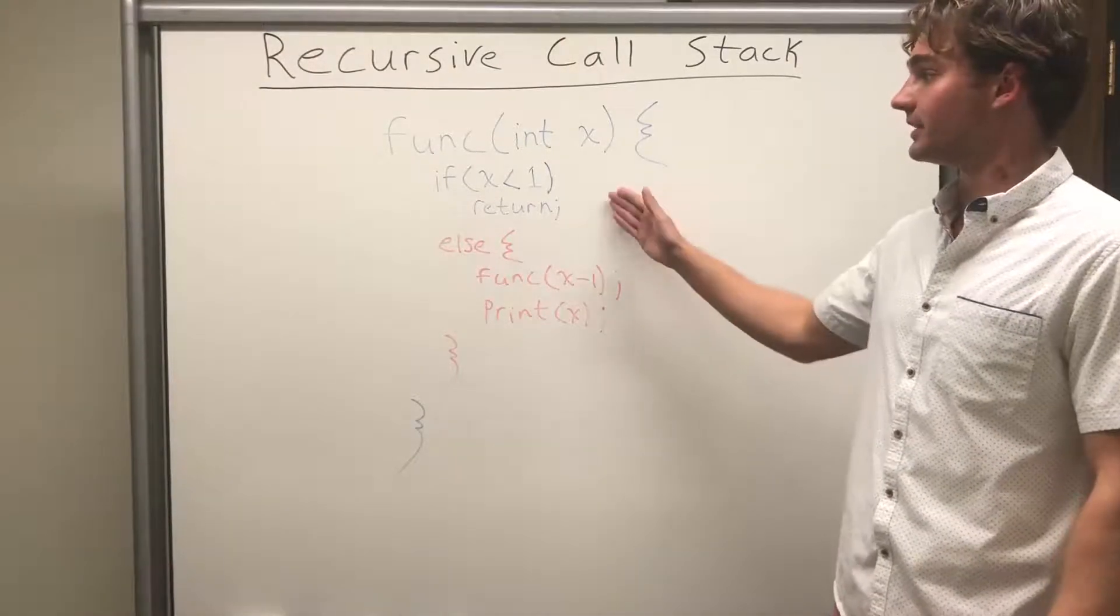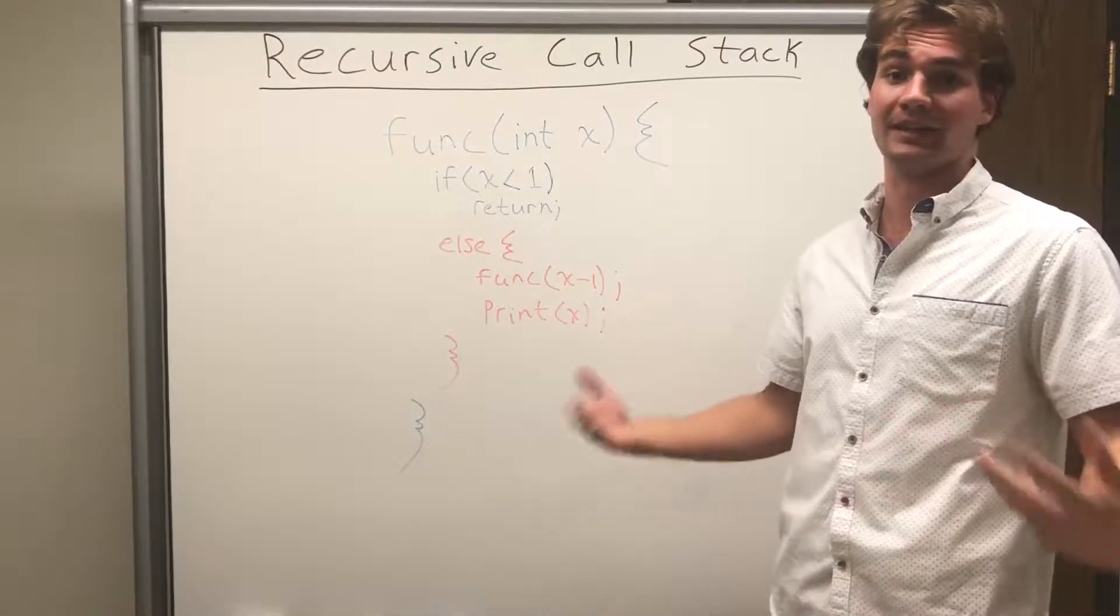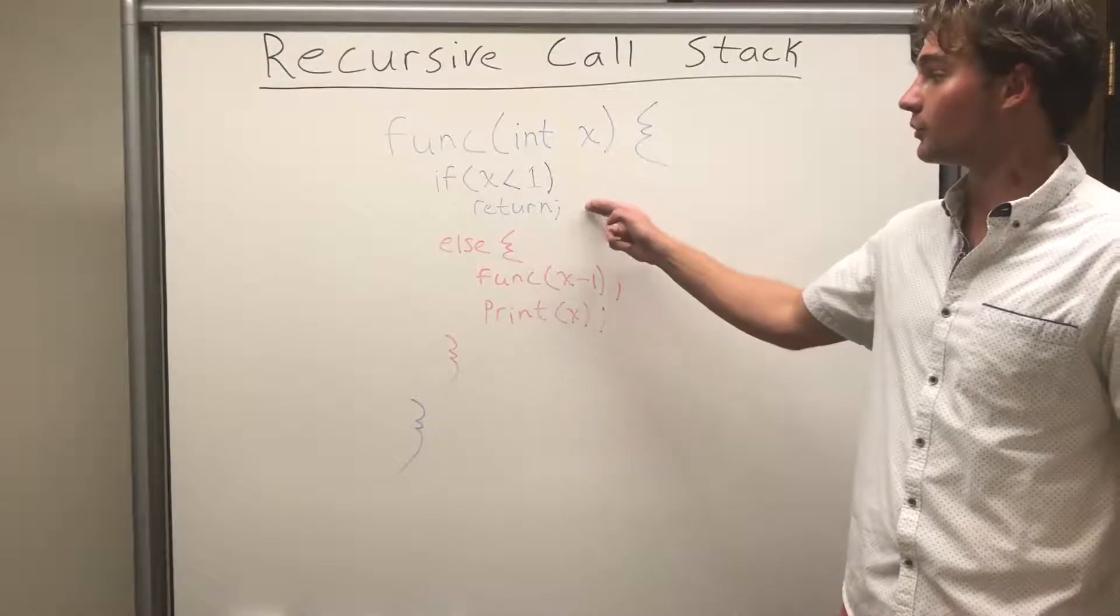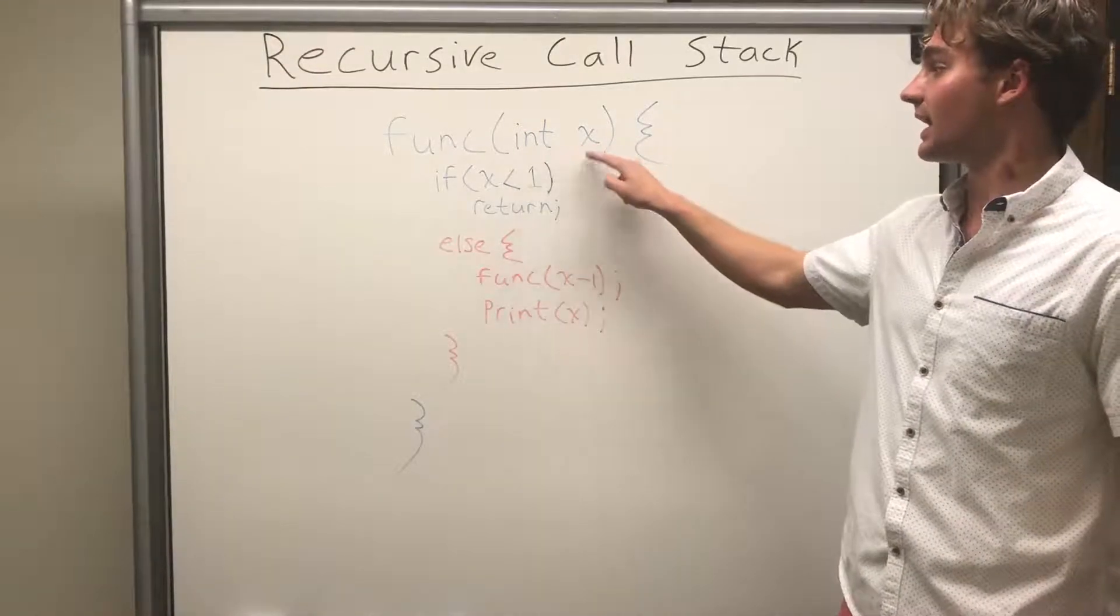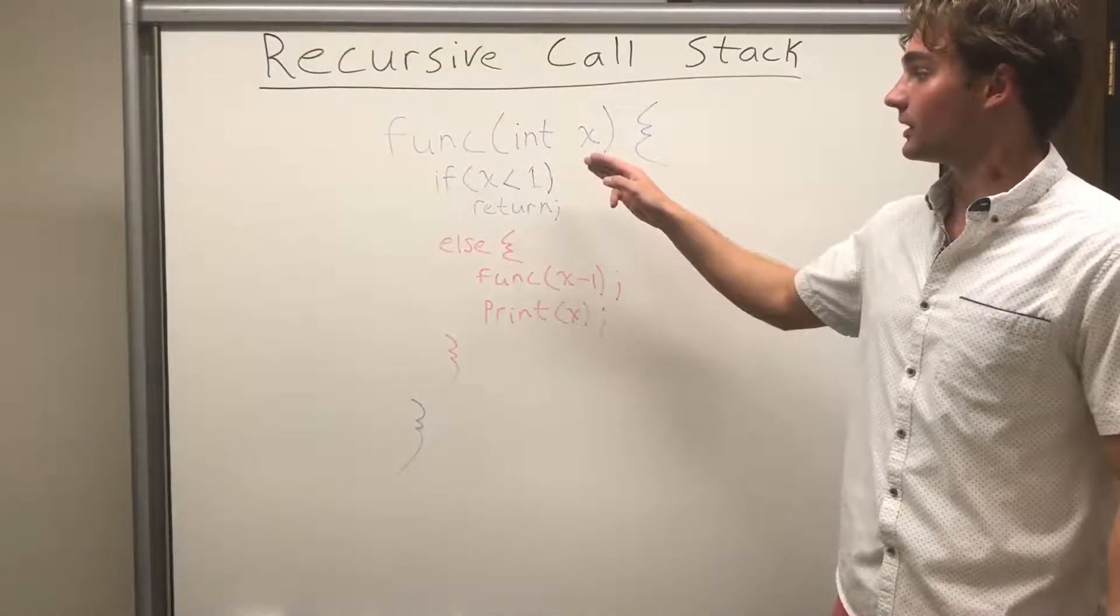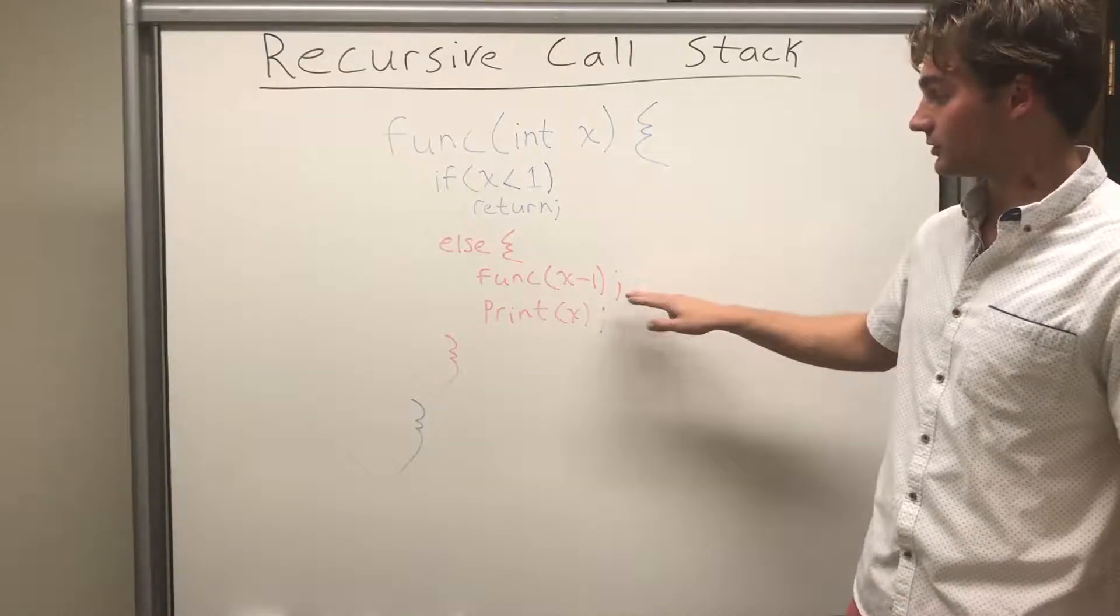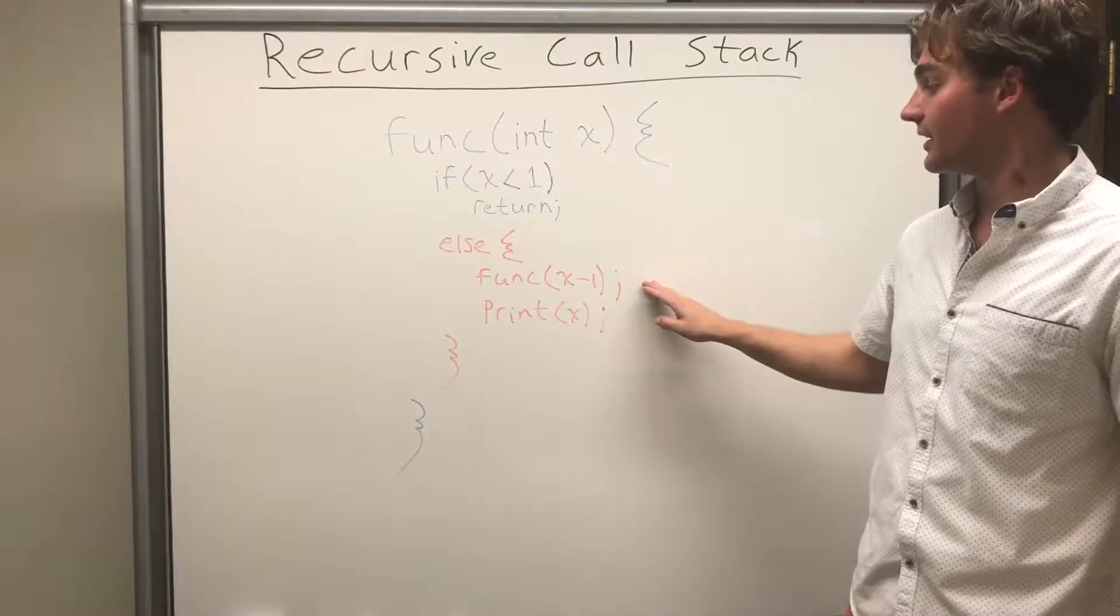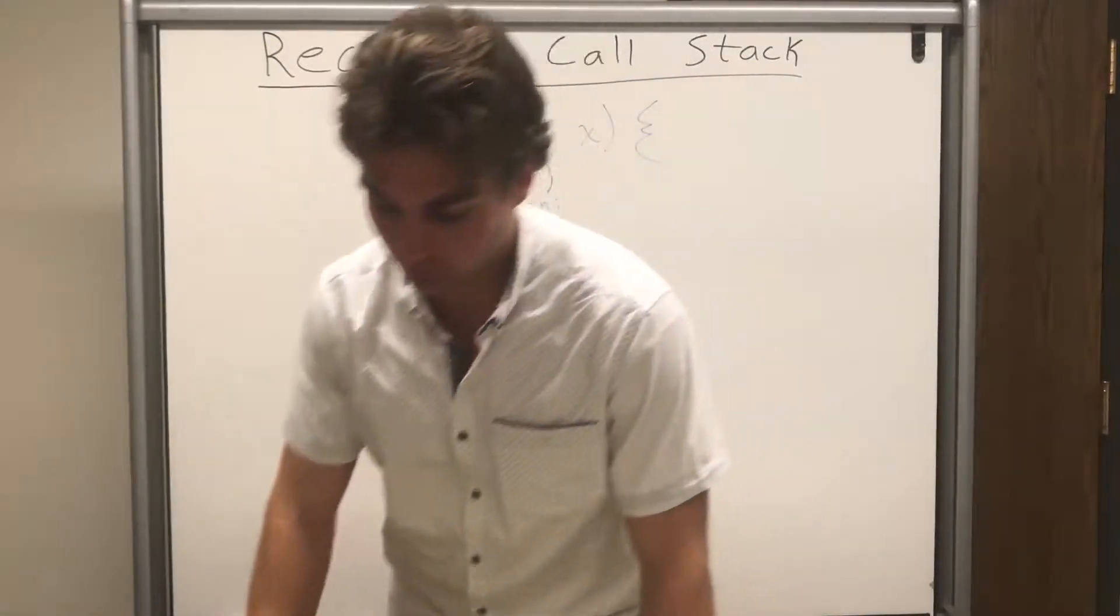So I wrote a very simple recursive function. Very first and foremost, you need a base case. You need something for the program to exit, otherwise it'll be an infinite loop forever. So if x is less than 1, we're going to get out of it. And we're going to send in a number, an int x, as a variable for the function. If x is less than 1, we're going to get out. Else, we're going to call ourselves, here's the recursion part, function of x minus 1, and then we're going to print x. So let's go through an example about how the call stack works.